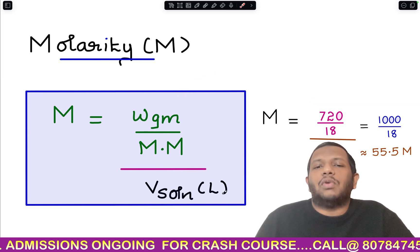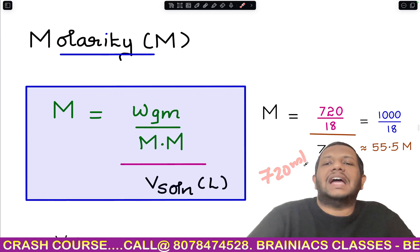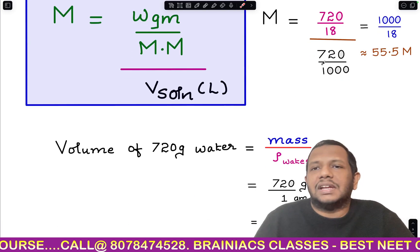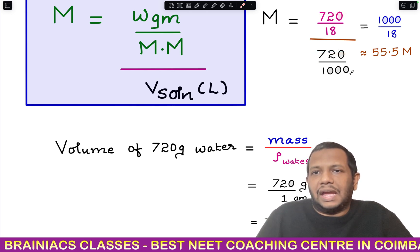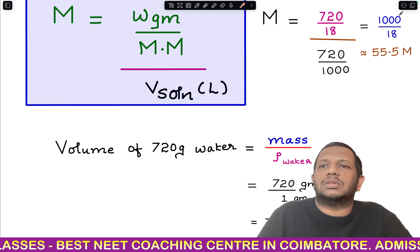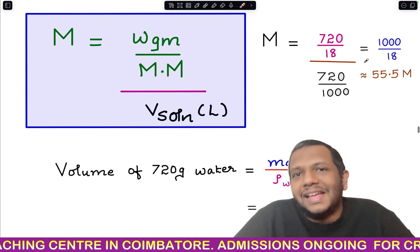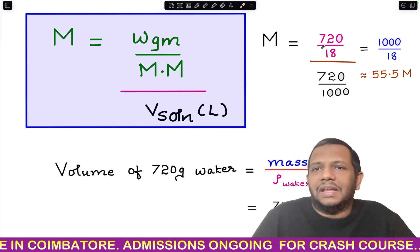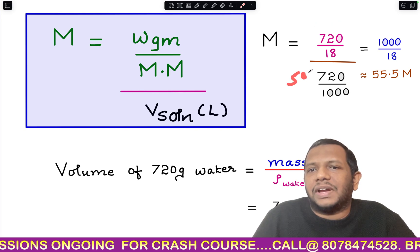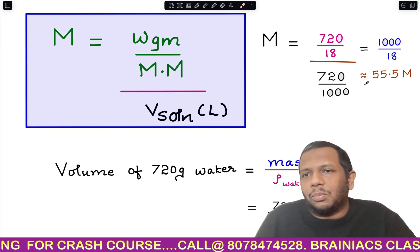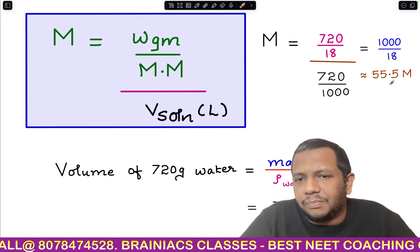Now substituting: weight in grams = 720, molar mass of water = 18, and volume = 720 mL. We convert volume to liters by dividing by 1000, so volume = 720/1000 L. The 720 in the numerator and denominator cancel, leaving 1000/18, which gives 55.5 M. If you put any weight — say 500 g — volume also becomes 500/1000 L and they cancel the same way.